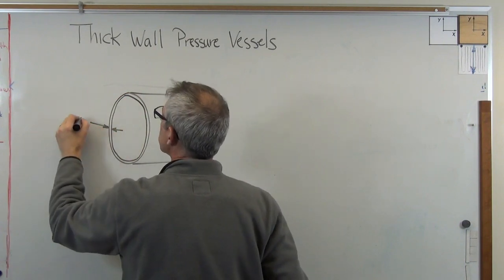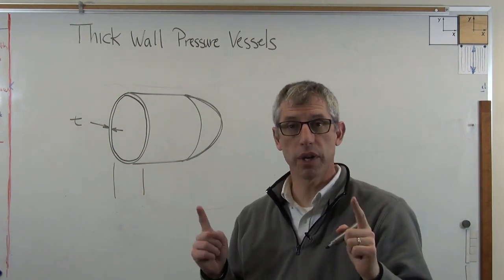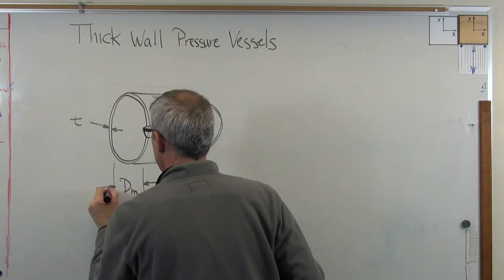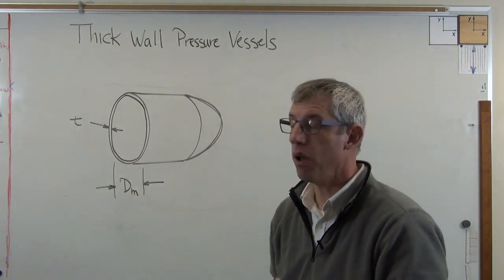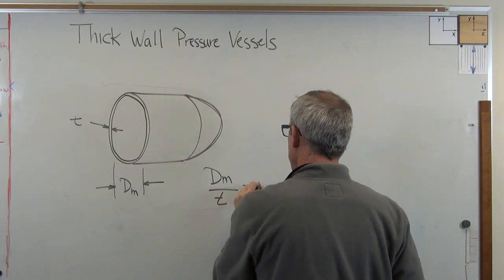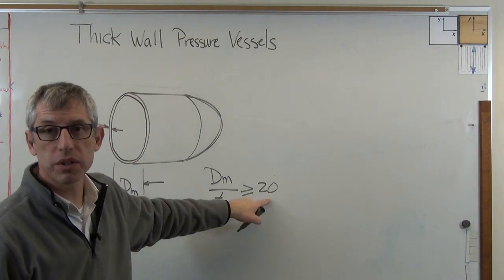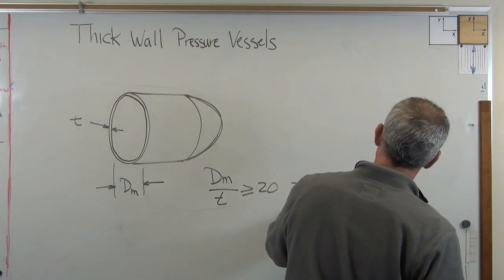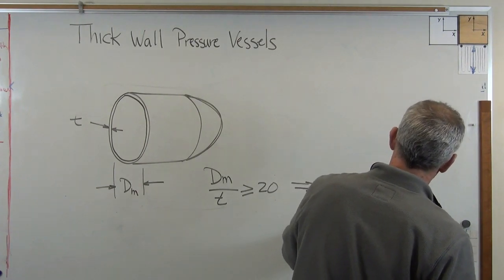The thickness we'll call T, and the mean diameter dm, which is the average of the outside and the inside diameter. If dm is sufficiently large compared to T, then we can call this a thin wall. The rule of thumb is that if dm over T is greater than or equal to 20, and this is kind of an empirical number, not a hard boundary, then what you have is a thin wall pressure vessel.